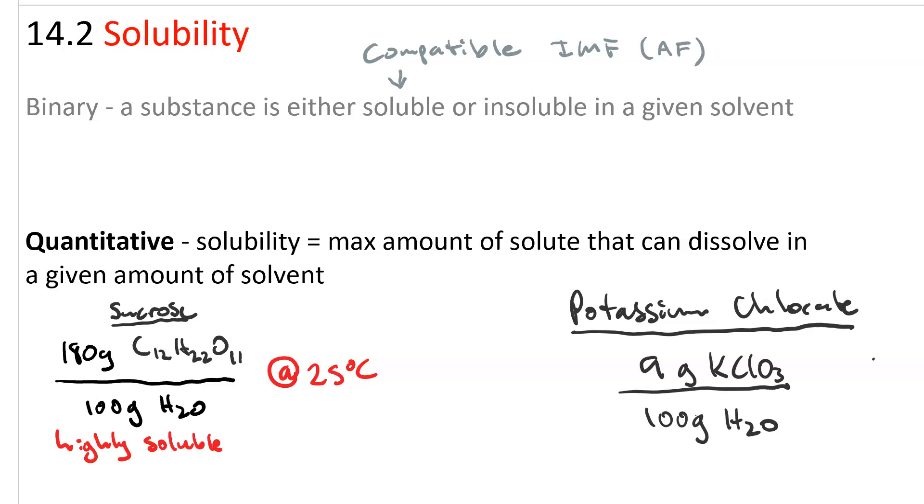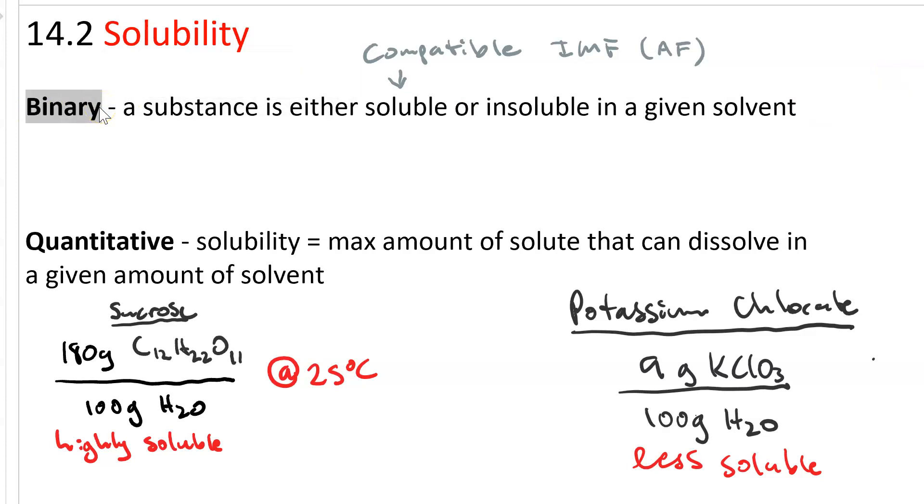So, we say that sucrose is more soluble than potassium chlorate. Solubility can be quantitative or binary. Going back to the binary sense, to determine whether or not one substance is soluble in water, we turn to the solubility rules.